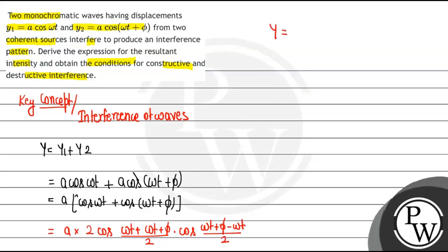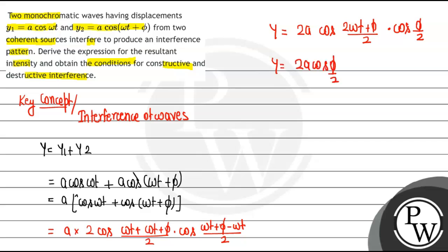Applying the formula, the equation Y becomes 2A cos(φ/2) times cos(ωt + φ/2). This is your new wave form.